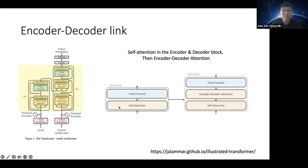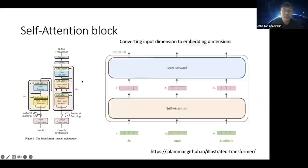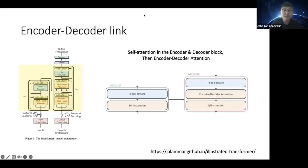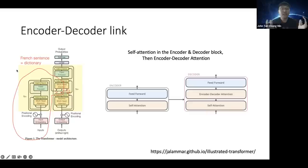The original Transformer has an encoder and a decoder, originally designed for translation like French to English. The encoder output goes into the key and value, while the decoder output serves as the query. The encoder acts like a reference dictionary with key-value pairs from the French sentence, and the decoder queries it to generate the English translation word by word.